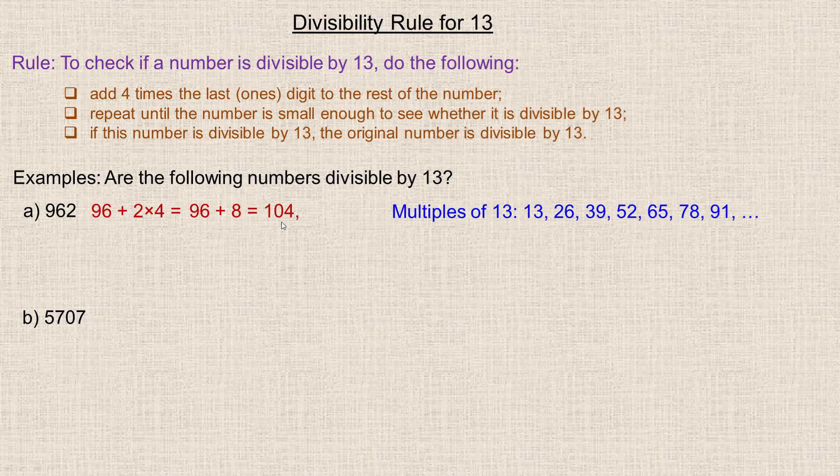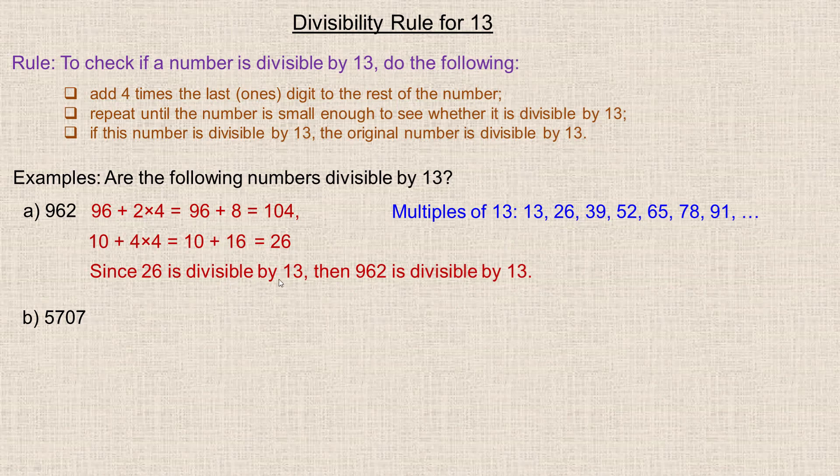Now, if you didn't recognize that, you could take 104 and break it down to 10 plus 4 times the ones digit, so 4 times 4. 4 times 4 is 16, 10 and 16 add to 26, and there is a more easily recognizable multiple of 13. 2 times 13 is 26. So since 26 is divisible by 13, then 962 is divisible by 13.